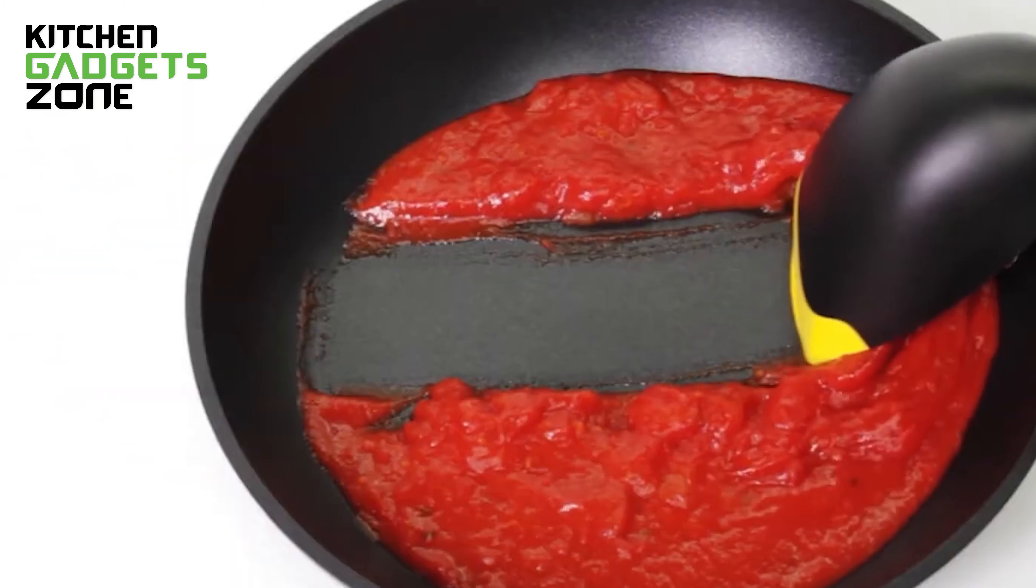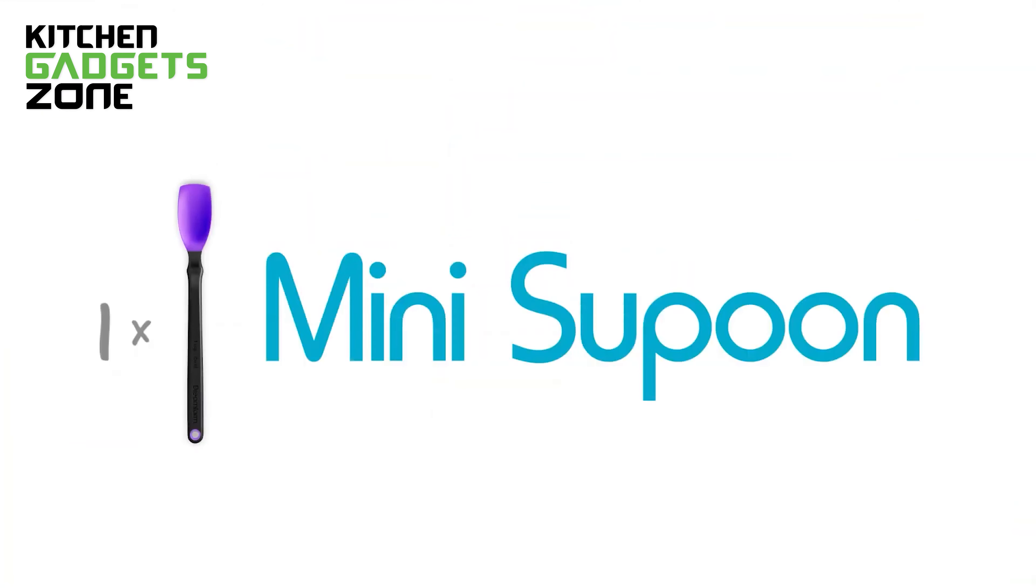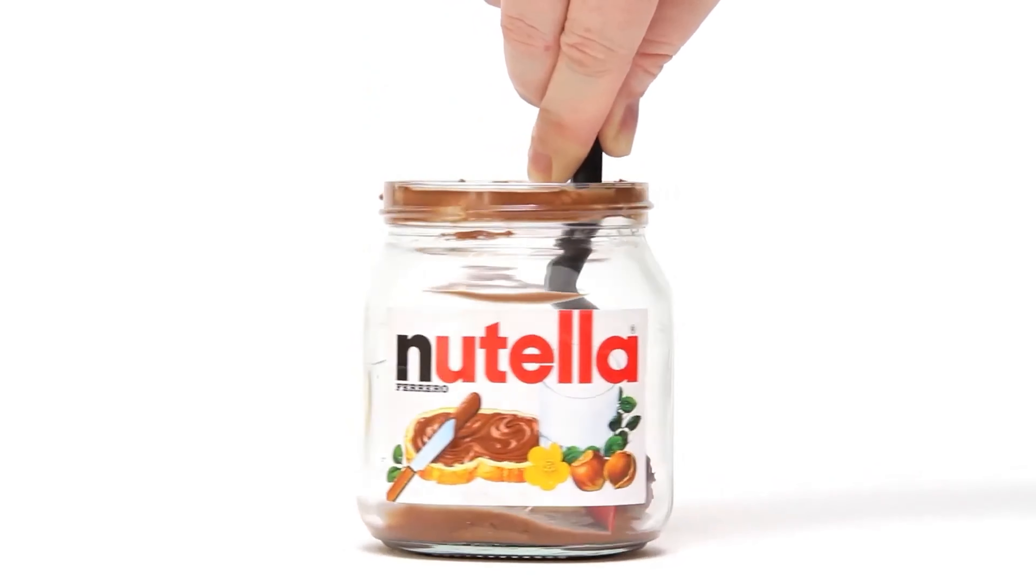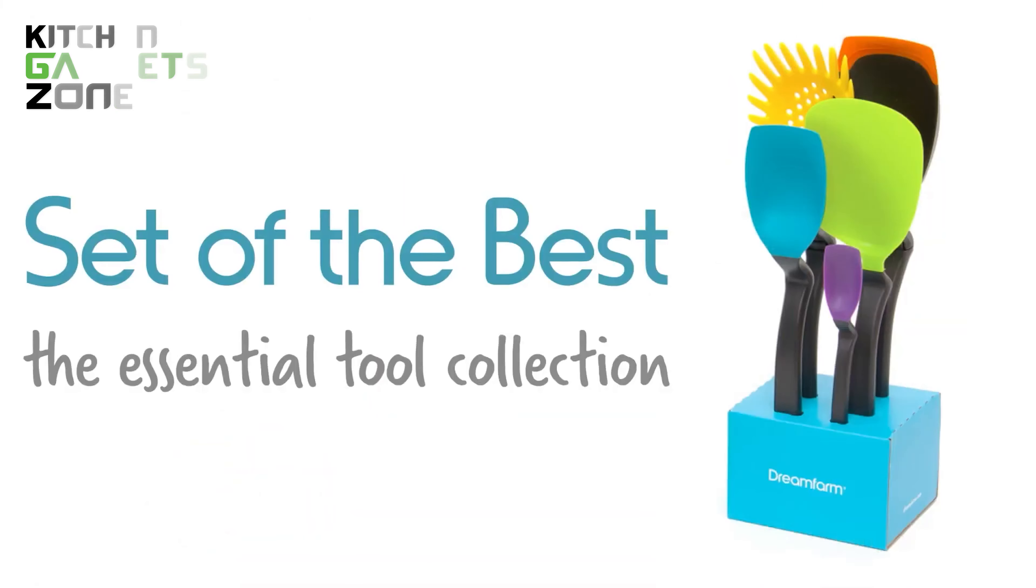For smaller tasks, the Mini Chopula and Mini Suppoon have got you covered. From lifting cookies to scraping every last bit from jars and containers, these Mini Marvels ensure no taste goes to waste.